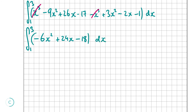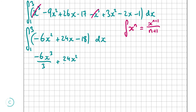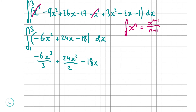Now we integrate. When integrating a term xⁿ, it becomes xⁿ⁺¹/(n+1). So -6x² integrates to -6x³/3, 24x integrates to 24x²/2, and -18 (a constant with no variable) integrates to -18x. We evaluate this over the range from 1 to 3.